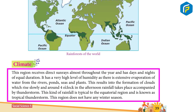This region receives direct sun rays almost throughout the year and has days and nights of equal duration. It has a very high level of humidity as there is extensive evaporation of water from the rivers, seas, and plants. This results in the formation of clouds which rise slowly, and around 4 o'clock in the afternoon rainfall takes place accompanied by thunderstorm.